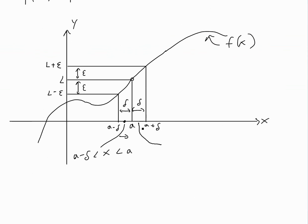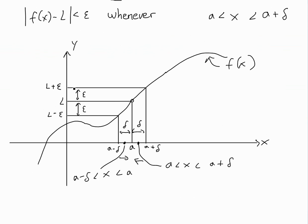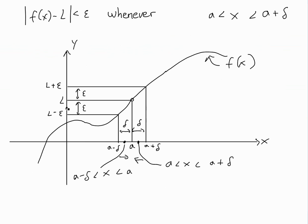Now for the right-hand limit, we're only on the right side of a, approaching from right to left. So x is going to be between a and a plus delta — it's less than a plus delta but greater than a. The definition is saying: if f of x is somewhere in the epsilon band around L, then for the left-hand limit, you need a delta such that x falls in that interval. If epsilon is really small, then delta has to be correspondingly small as well.